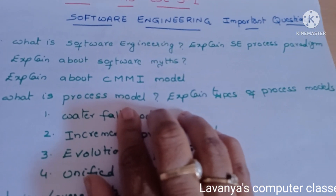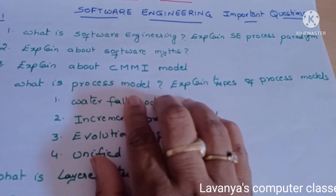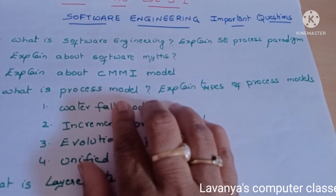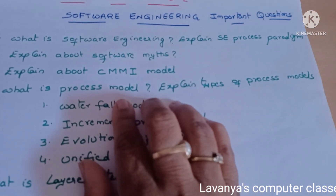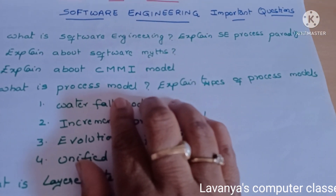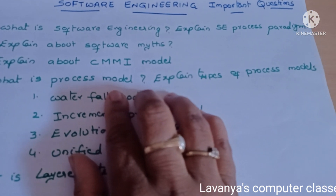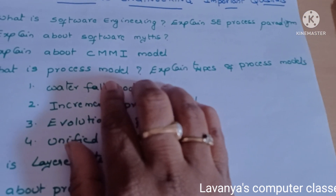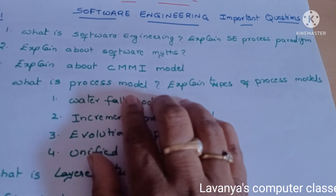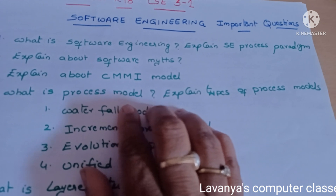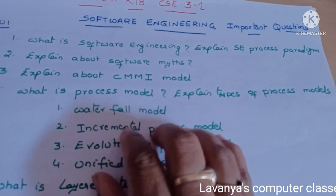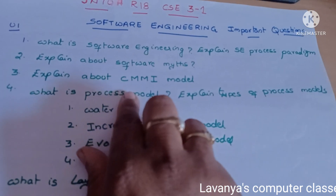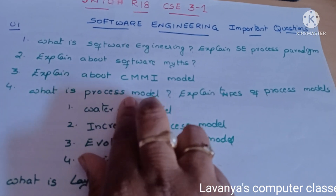Unit one: The first question is what is software engineering? Explain the SE process paradigm — that is, the software engineering definition and explain the SE process paradigm. This is an important question because it is a fundamental question.